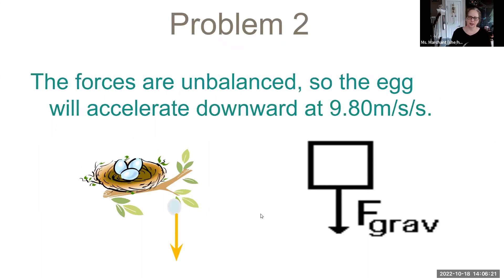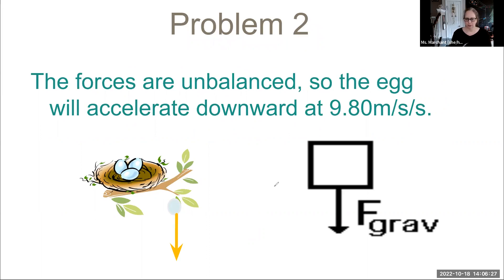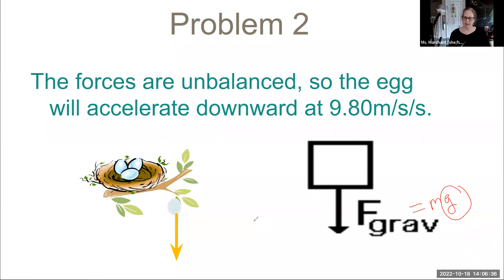The forces are unbalanced. There is no force acting upward to balance it out. So the force of gravity is equal to mass times gravity. We're accelerating down at 9.8. The net force is always in the direction of the acceleration.